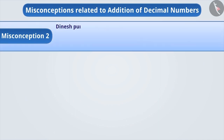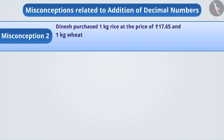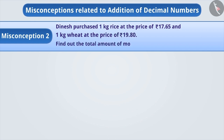Misconception 2. Dinesh purchased 1 kg of rice at the price of Rs. 17 and 65 paise, and 1 kg of wheat at the price of Rs. 19 and 80 paise. Find out the total amount of money Dinesh has to pay the shopkeeper.